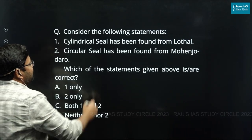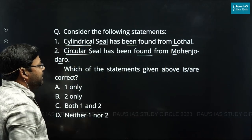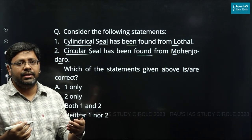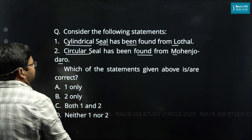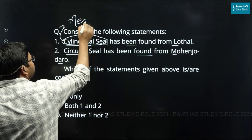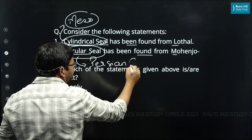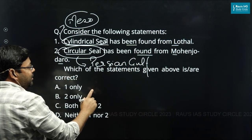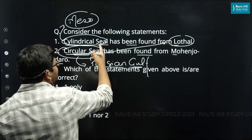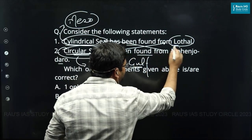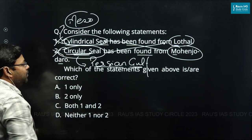The next question states that the cylindrical seal has been found from Lothal and the circular seal from Mohenjo-daro. Regarding IVC's long-distance trade with Mesopotamia and the Persian Gulf, the cylindrical seal was considered a Mesopotamian seal and the circular seal was considered a Persian Gulf seal. However, the circular or Persian Gulf seal has been found from Lothal, and the cylindrical or Mesopotamian seal from Mohenjo-daro — so both statements are wrong.